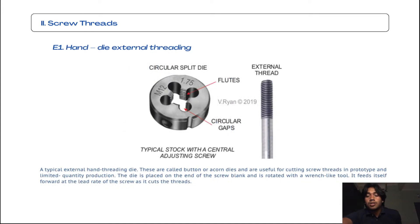The first subtopic from screw threads is hand die external threading. A typical external hand threading die, these are called bottom or acorn dies and are useful for cutting screw threads in prototype and limited quantity production. The die is placed on the end of the screw blank and is rotated with a wrench-like tool. It feeds itself forward at the lead rate of the screw as it cuts the threads.